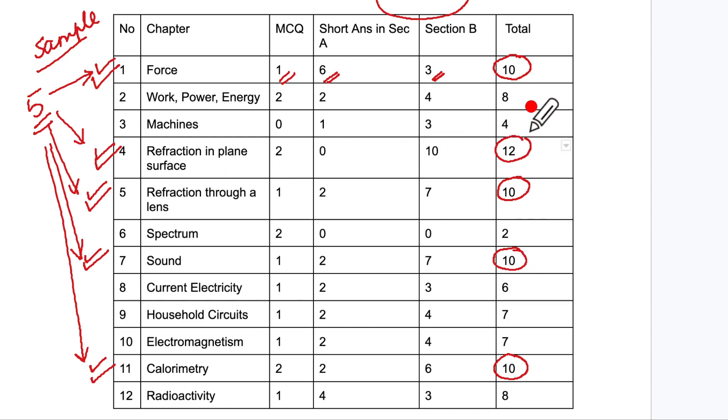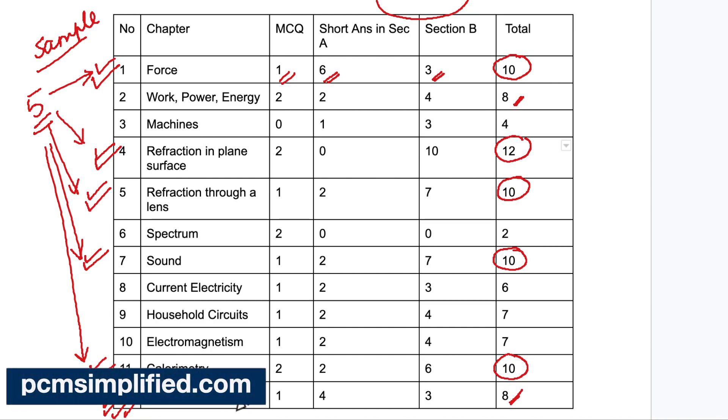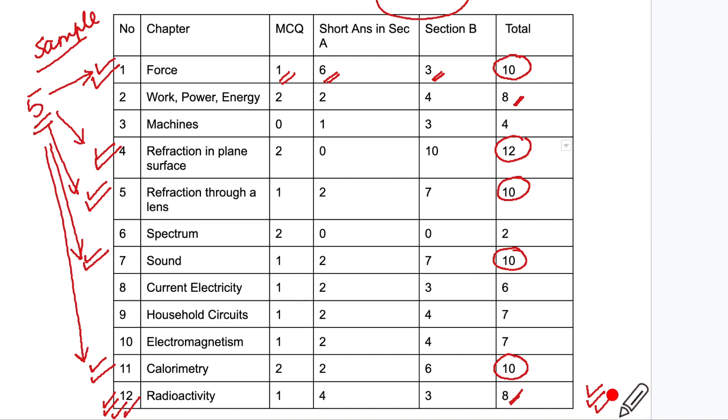Now which are the relatively less important are 8 marks each: work, power, energy, and radioactivity. Now radioactivity you can actually fully concentrate because this is learning type of question with just a few numericals or applications. So this is going to be your short answer question where you can get your full marks.